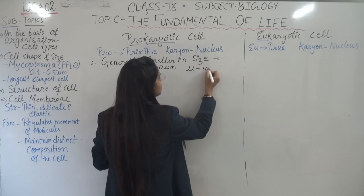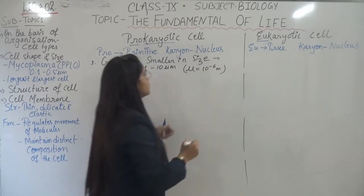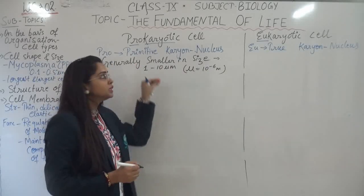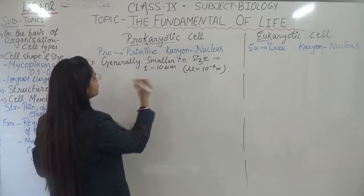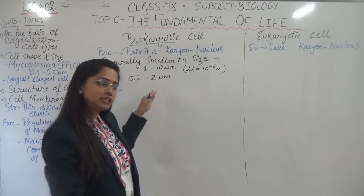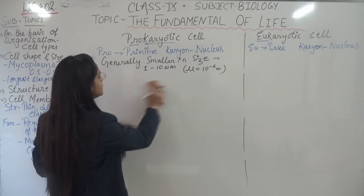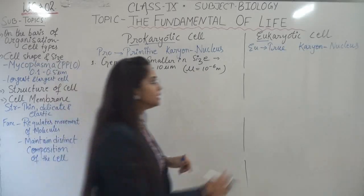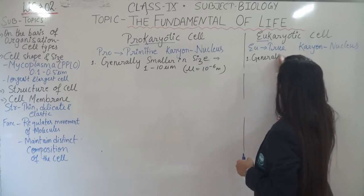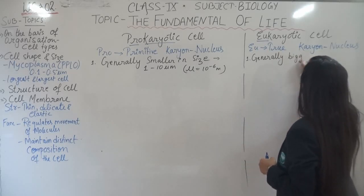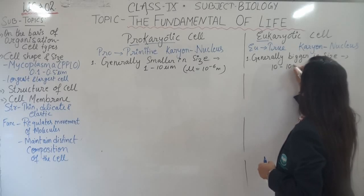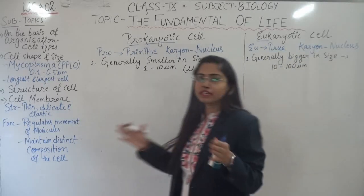One micrometer means 10 to the power minus 6 meter. The eukaryotic cell comparatively is larger in size — generally bigger in size. And the size will vary from 10 micrometers to 100 micrometers. This is the range of the size of the eukaryotic cell.